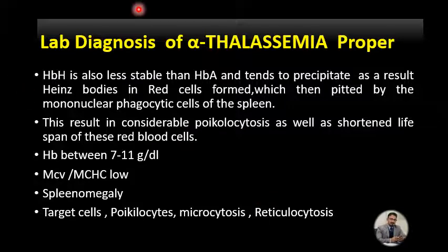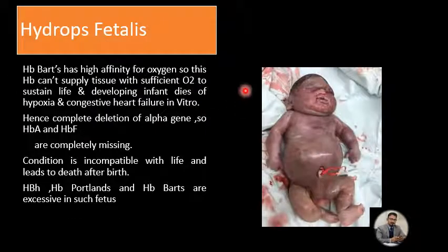Hydrops fetalis (also called hydrops) is a condition that occurs when large amounts of fluid build up in a baby's tissues and organs, causing extreme swelling. It may result from immune system causes — for example, when the mother's immune system causes the baby's red blood cells to break down. It is the most dangerous complication of hemolytic anemia.